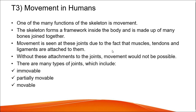Movement in humans: one of the many functions of the skeleton is movement. The skeleton forms a framework inside the body and is made up of many bones joined together. Movement is seen at joints due to muscles, tendons, and ligaments attached to them. Without these attachments, movement would not be possible. There are many types of joints, including immovable, partially movable, and movable.